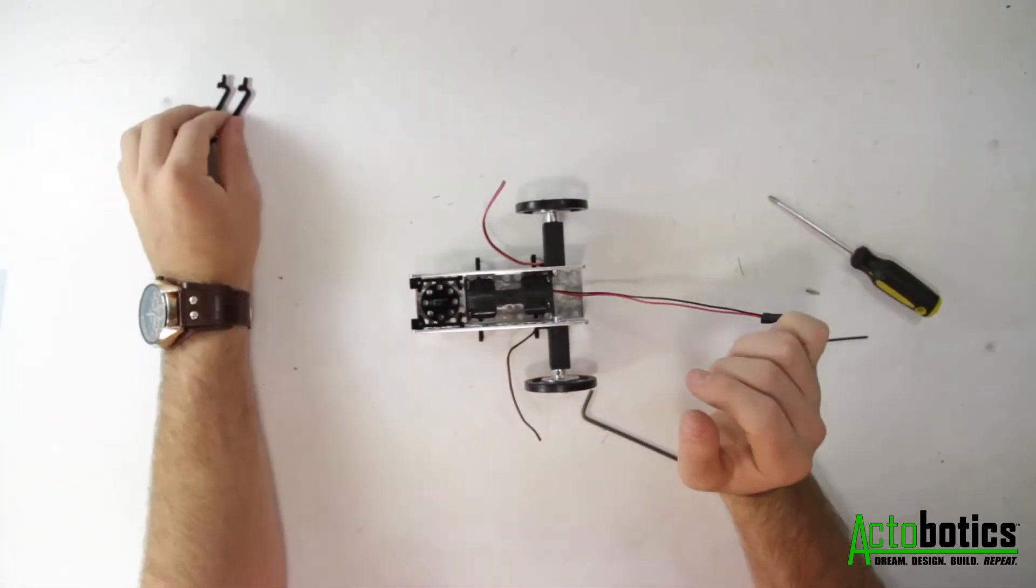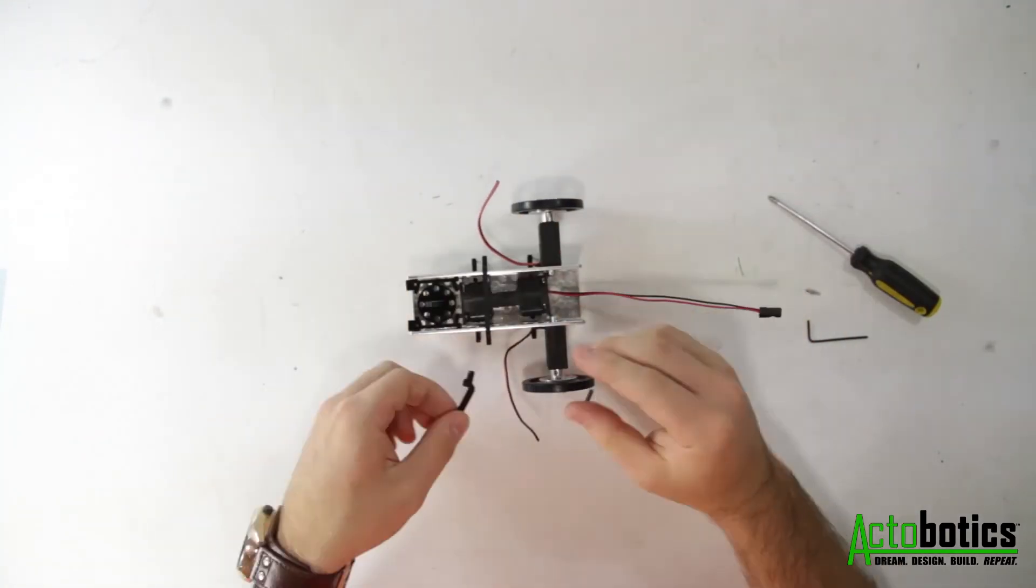Finally the battery tray slides into the channel and is held in place using the snap in battery mounts.